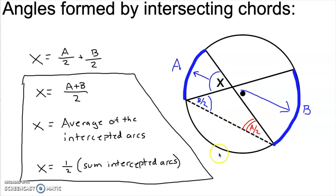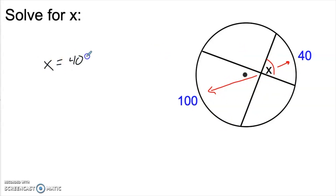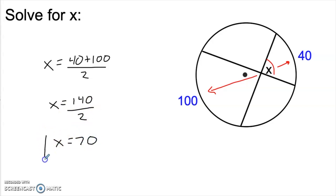Once we understand this relationship, we don't need to add the chord every time. We can simply find the two intercepted arcs and take their average to find X. Here's the simplest example: we have an angle formed by two intersecting chords, which means it has two intercepted arcs — one in front and one behind. To find X, I simply take the average of those two intercepted arcs: X is 40 plus 100 divided by 2, which is 140 over 2, or 70 degrees.